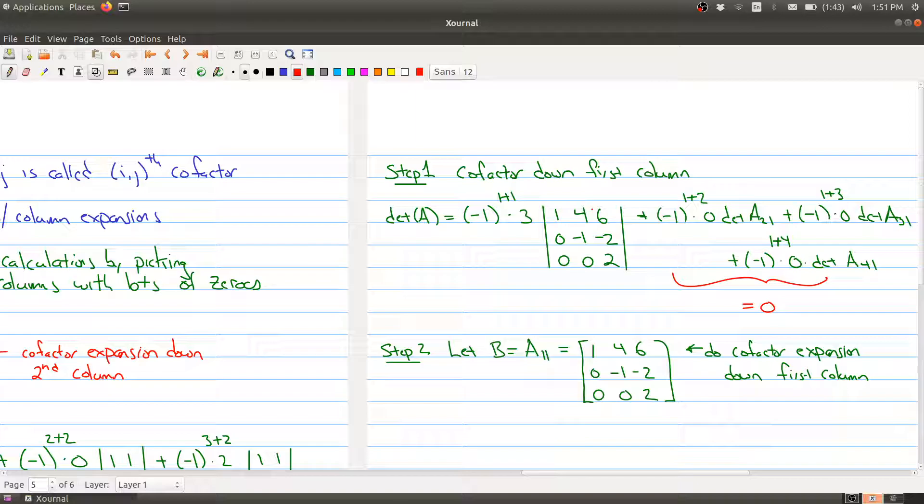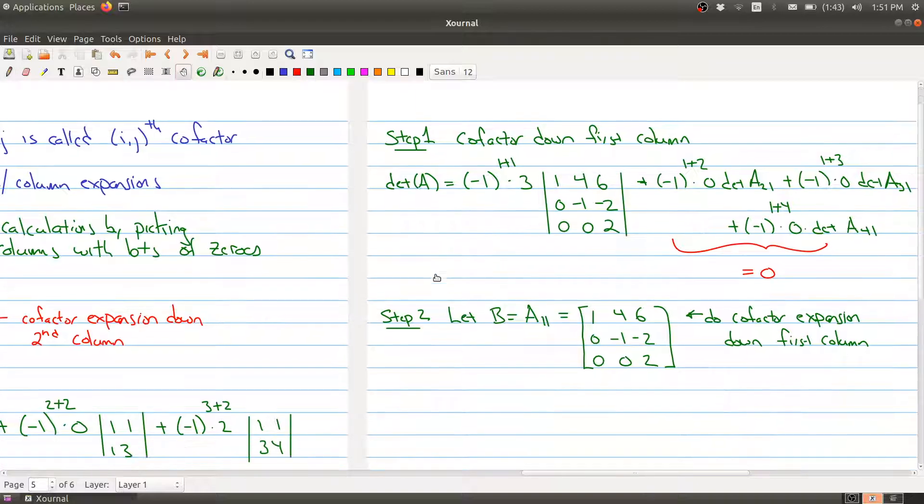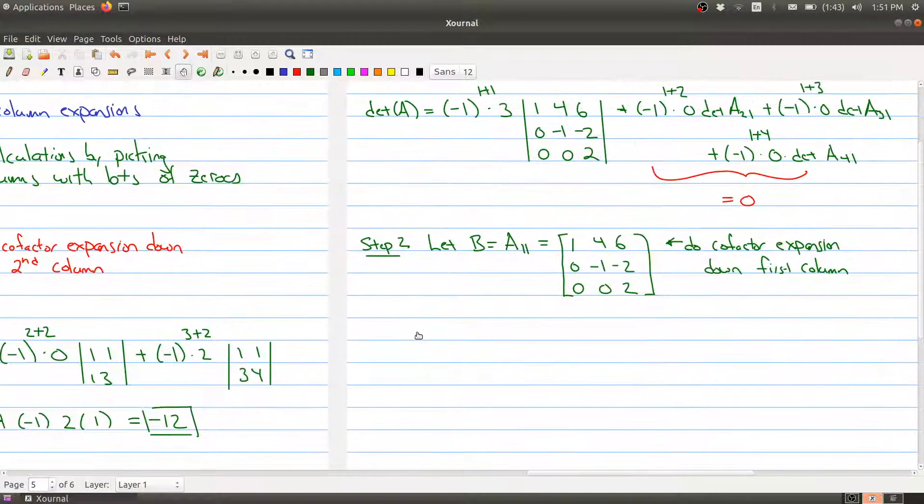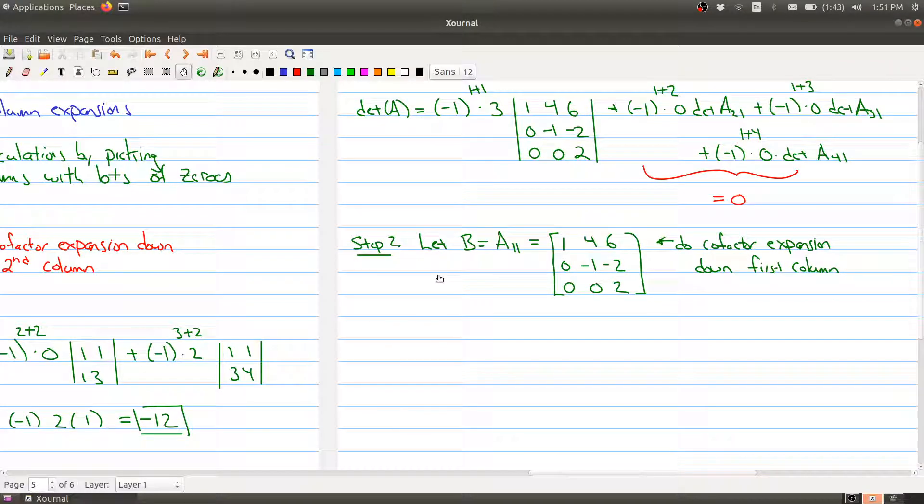Here we're seeing again the recursive nature of the definition of determinants. In step B2, I'm going to let B be this new matrix and now I need to find the determinant of it. Again we decide which row or column do we want to pick to simplify our calculations, and I've already said I'm going to do the cofactor expansion down the first column, so let's do that.